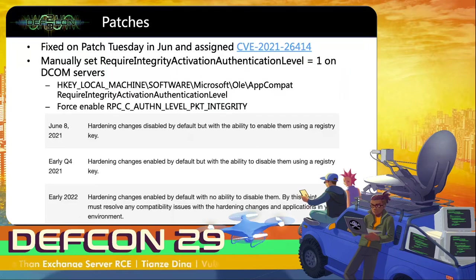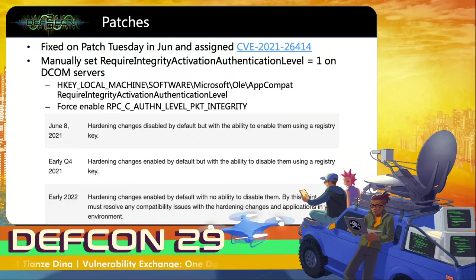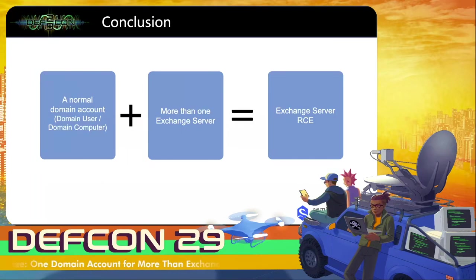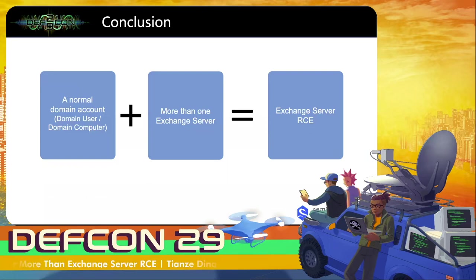This vulnerability has been fixed and assigned CVE-2021-26414. After installing the patch, you need to manually set the RequireIntegrityActivationAuthenticationLevel to 1 in the registry to enable DCOM protection. This protection will first enable RPC_C_AUTHN_LEVEL_PKT_INTEGRITY. After Q4 2021, this protection will be enabled by default on Windows. In conclusion, if you have compromised a normal domain account and there is more than one Exchange server in the Active Directory, you can execute any commands remotely on the Exchange server.